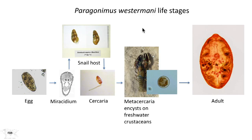Shown here are all the life stages of the parasite, starting with the egg, the miracidium, the snail hosts typically infected by Paragonimus species, and the cercariae. The cercariae then encyst — in this case, in a crayfish. You can see the metacercariae shown here, and then the adult worm that Kerbert discovered is shown here.